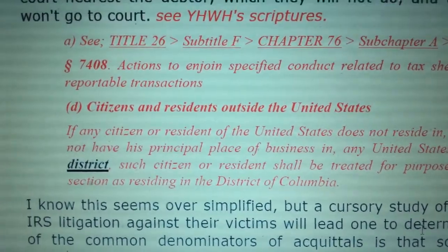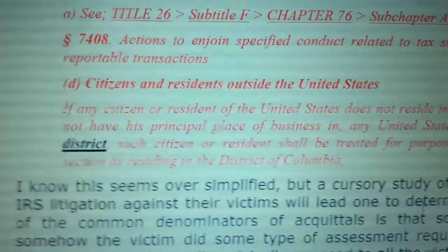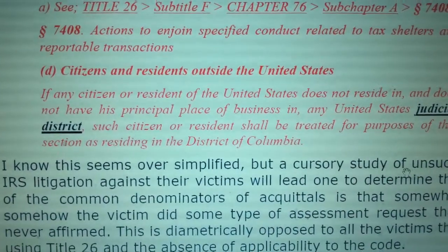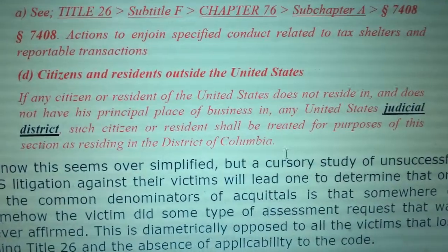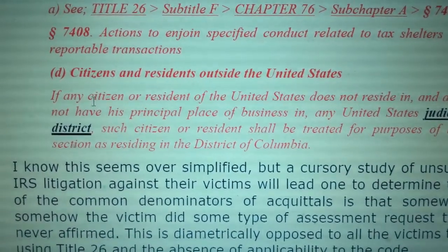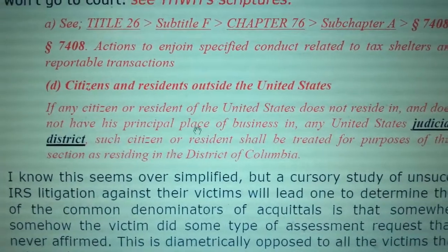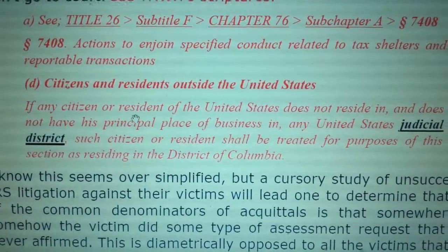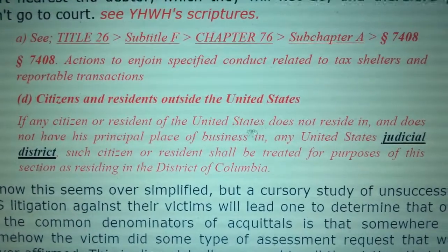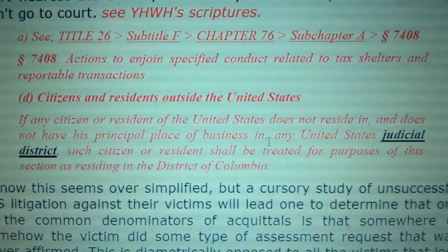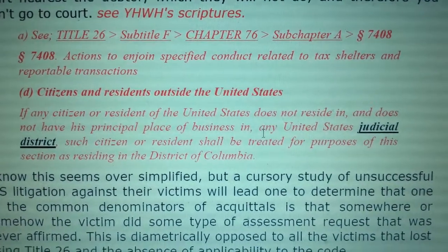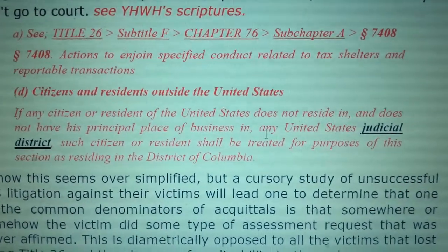And D. Citizens and Residents Outside the United States. Are you, do you have a number? Then you're a citizen. You're a resident if you live in the United States Corporation, corporate territories, which aren't the 50 states of the Union.